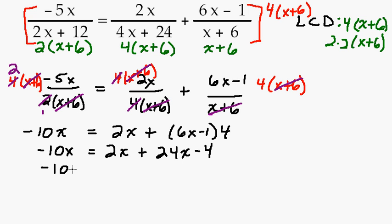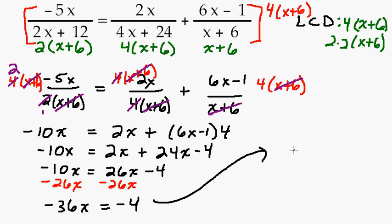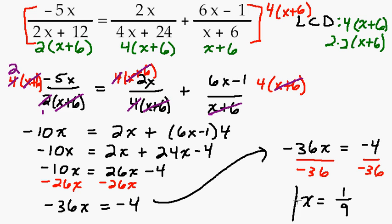To solve it we just need to get our x's on one side and our numbers on the other. We could combine our like terms on the right hand side first. So 2x plus 24x is 26x. And so we'll get our x's on the same side. We'll subtract 26x. Looks like we're almost done. And we get negative 36x equals negative 4. Let me write that over here. To get x by itself now you want to get rid of the negative 36. So to get rid of that I'm going to divide both sides by negative 36. And that's going to give me x equals positive 1 ninth. And that would be my answer.